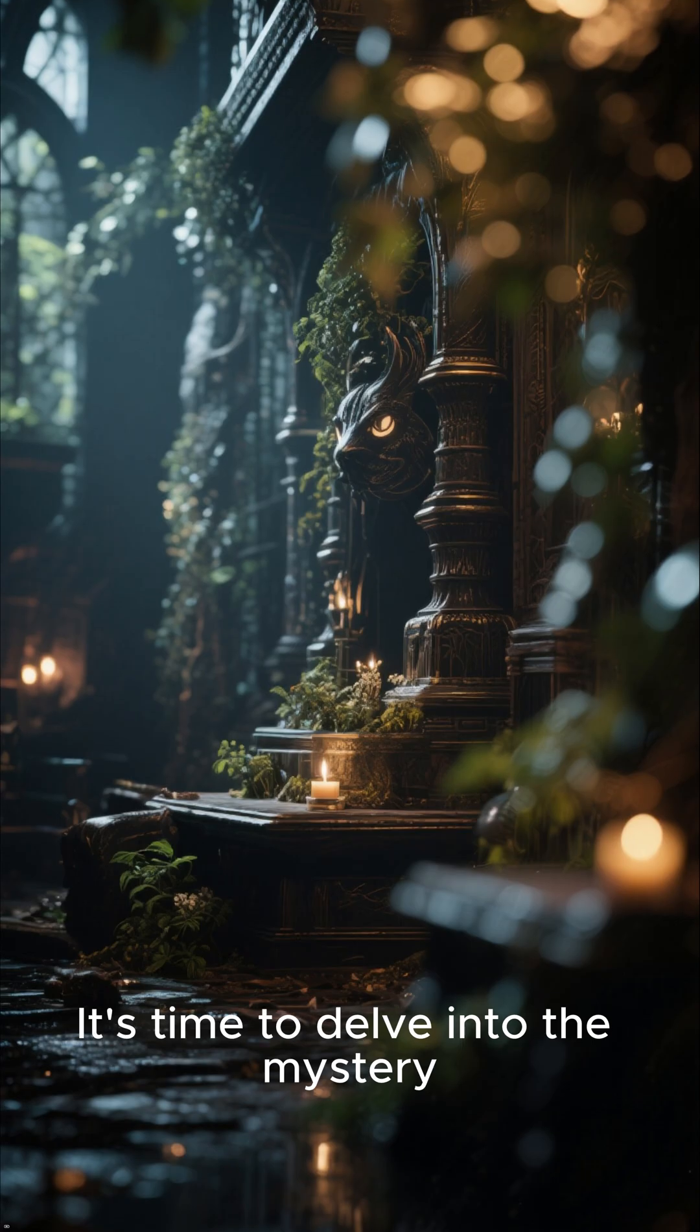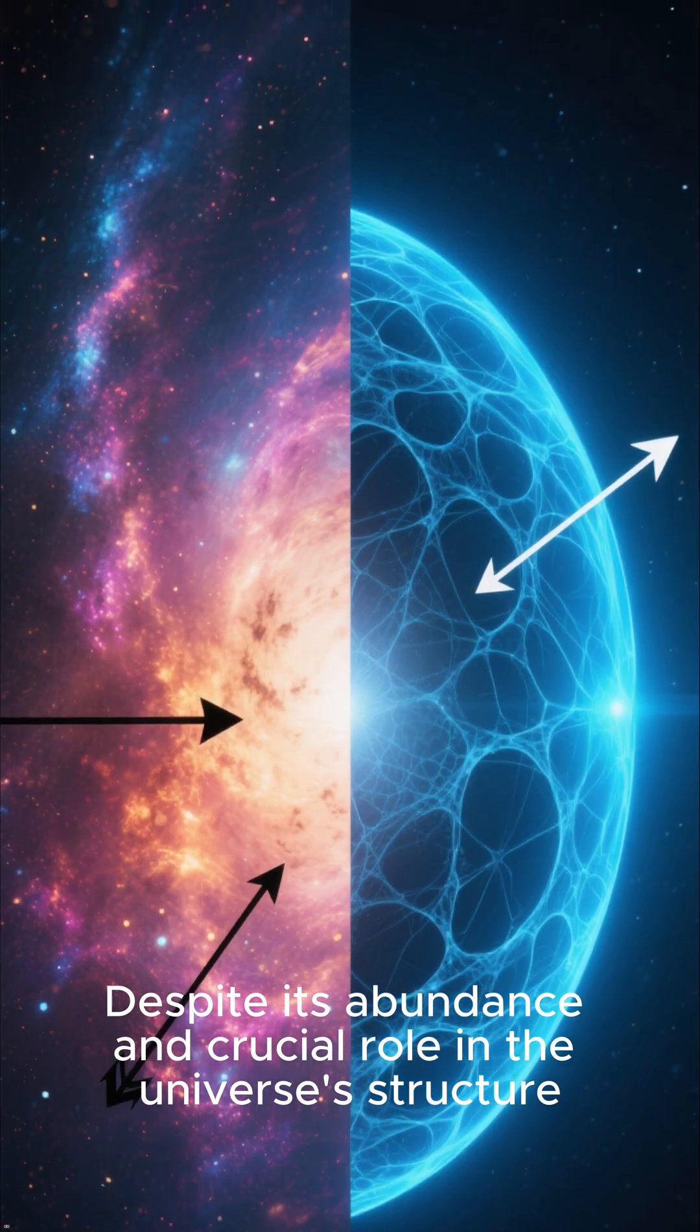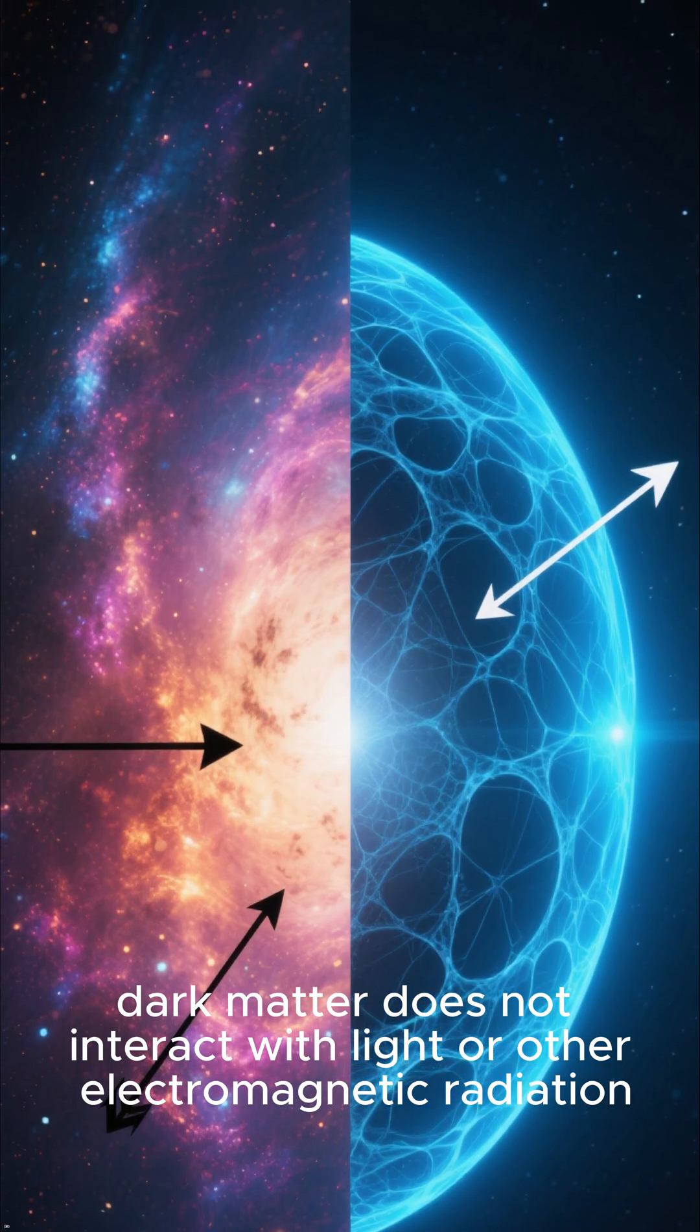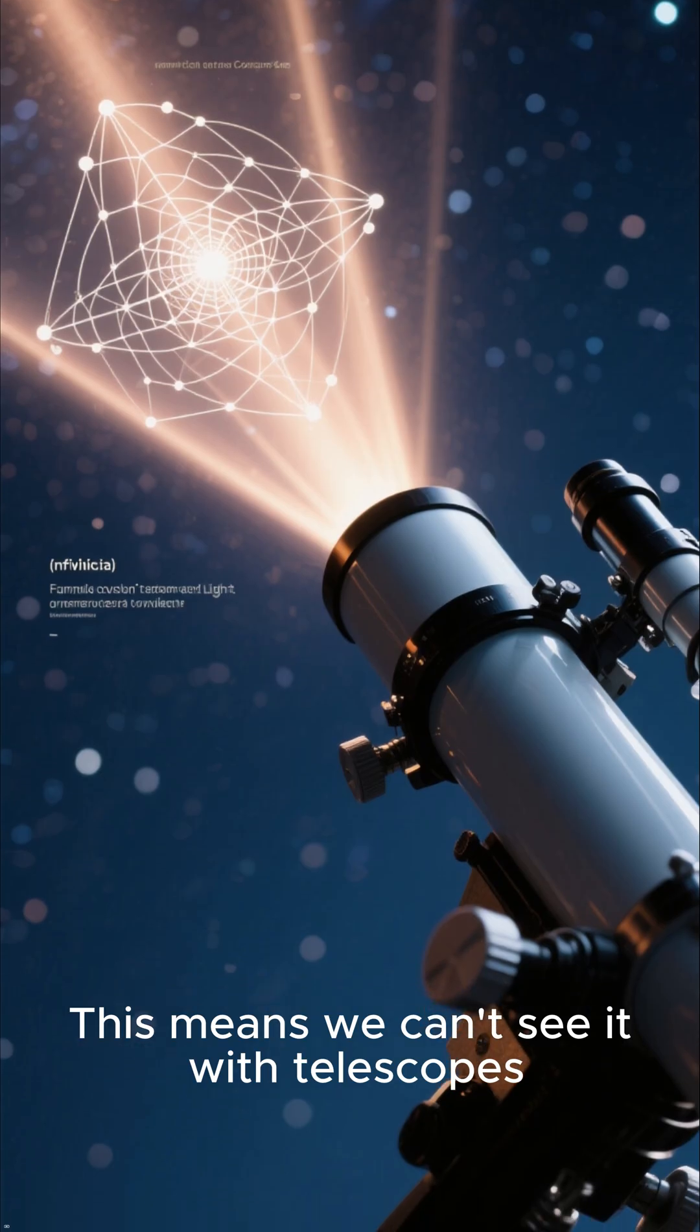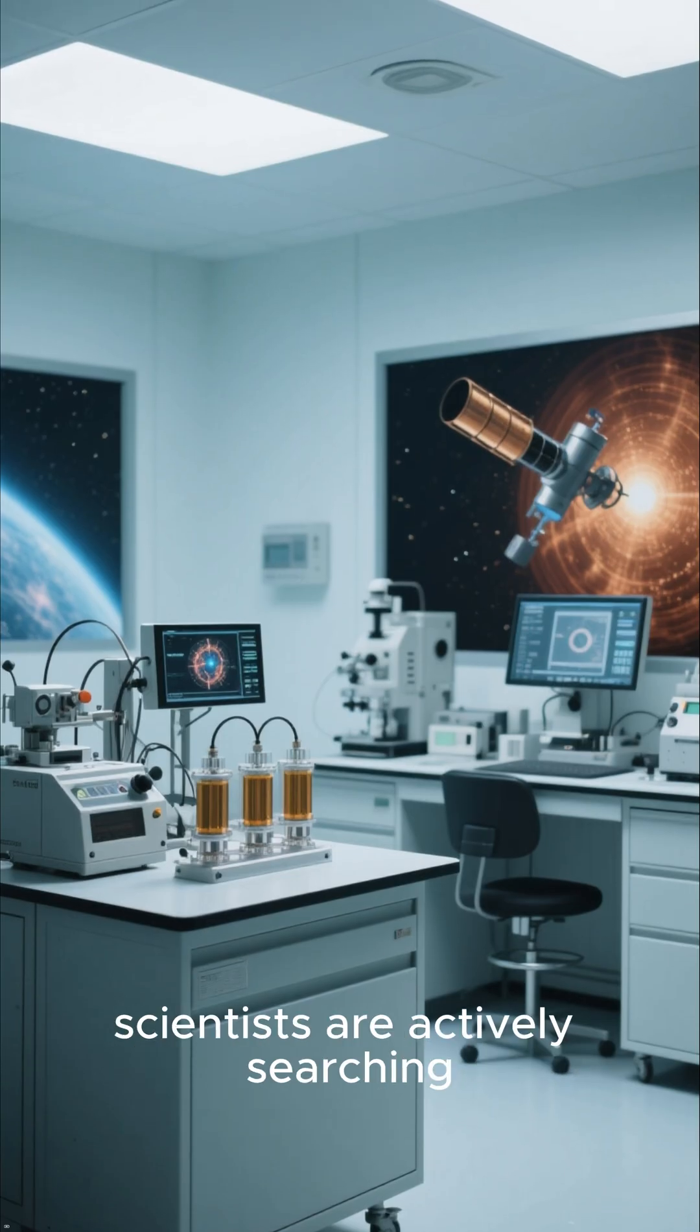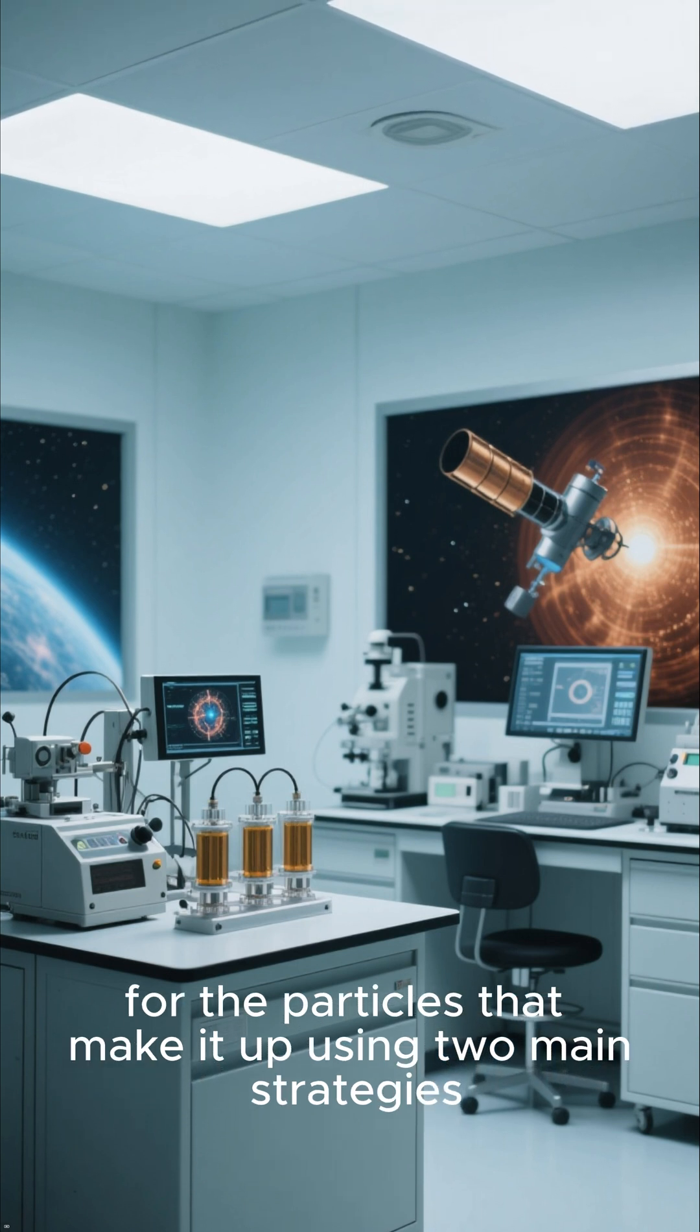The hunt for the unseen. It's time to delve into the mystery. Despite its abundance and crucial role in the universe's structure, dark matter does not interact with light or other electromagnetic radiation. This means we can't see it with telescopes. To detect dark matter, scientists are actively searching for the particles that make it up using two main strategies.